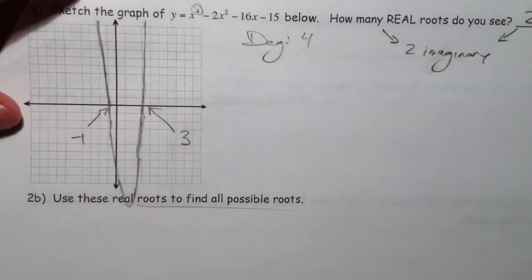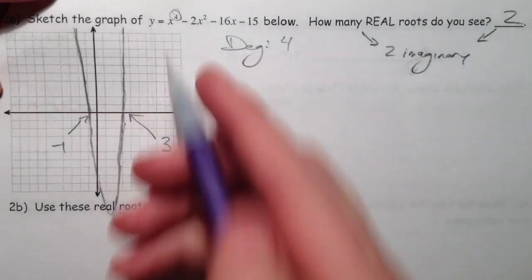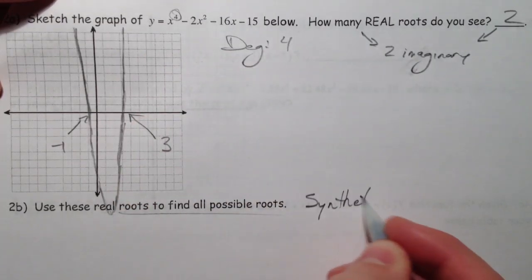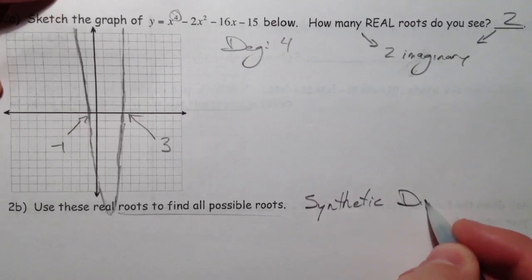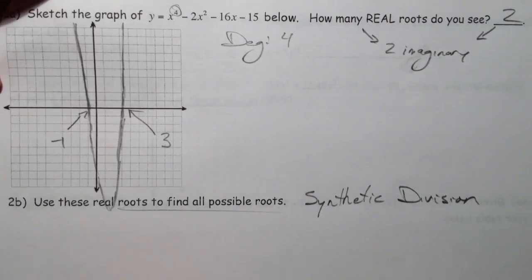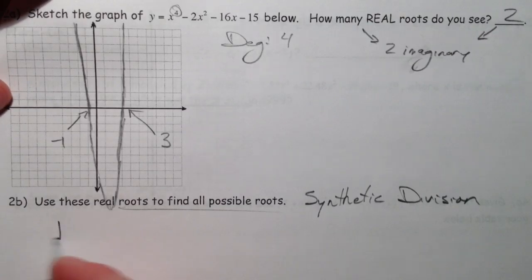We're going to use these roots. And to do this, to make it smaller, we're going to use synthetic division. And this is why we practice this so much the other day because this is really how it comes into play here. I'm going to check the negative 1 first.